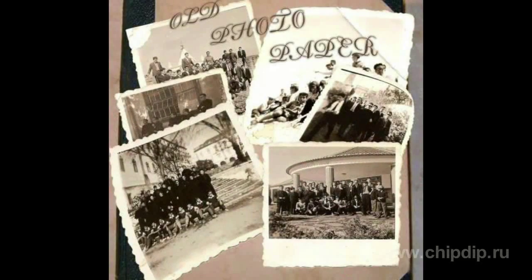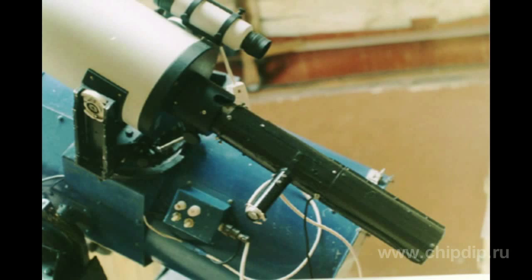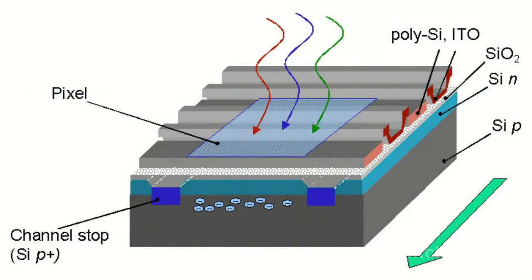Later there were TV cameras and photo multipliers. In the late 60s and early 70s, they started to develop the so-called charge coupled devices, abbreviated to CCD. The basis of CCDs is the fact that silicon is able to respond to visible light, and this led to the idea that this principle can be used to get images of luminous objects.